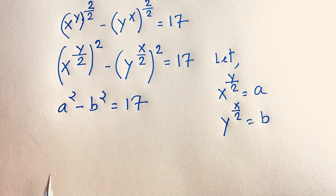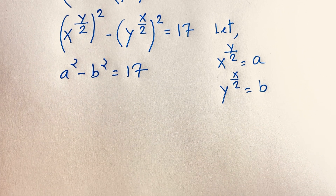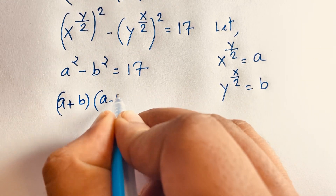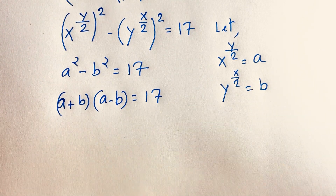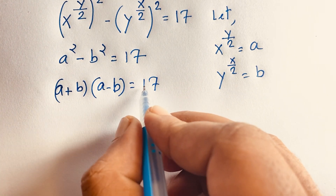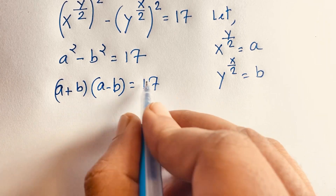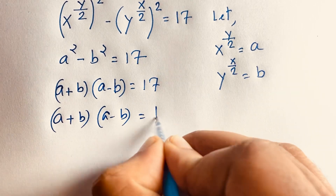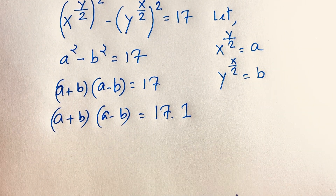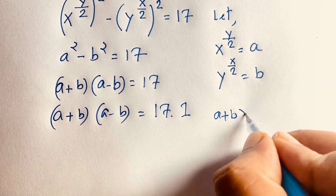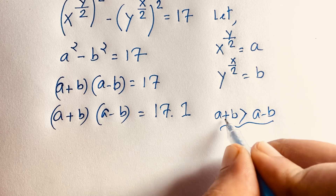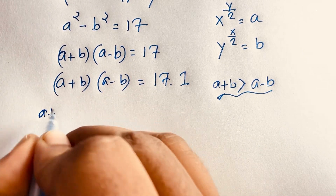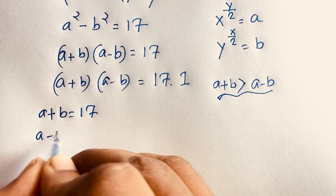If I apply the difference of squares formula — a squared minus b squared equals a plus b times a minus b — then this expression becomes a plus b times a minus b is equal to 17. Now I need to find the factors. It will be a plus b times a minus b equal to 17 times 1. Note that a plus b is always greater than a minus b, because of the plus versus minus.